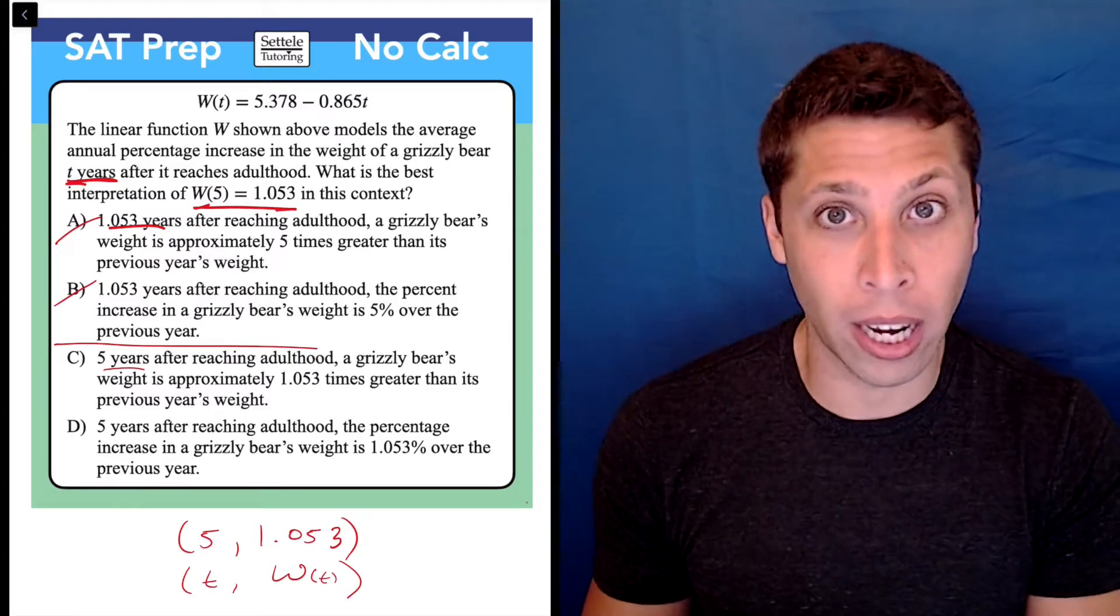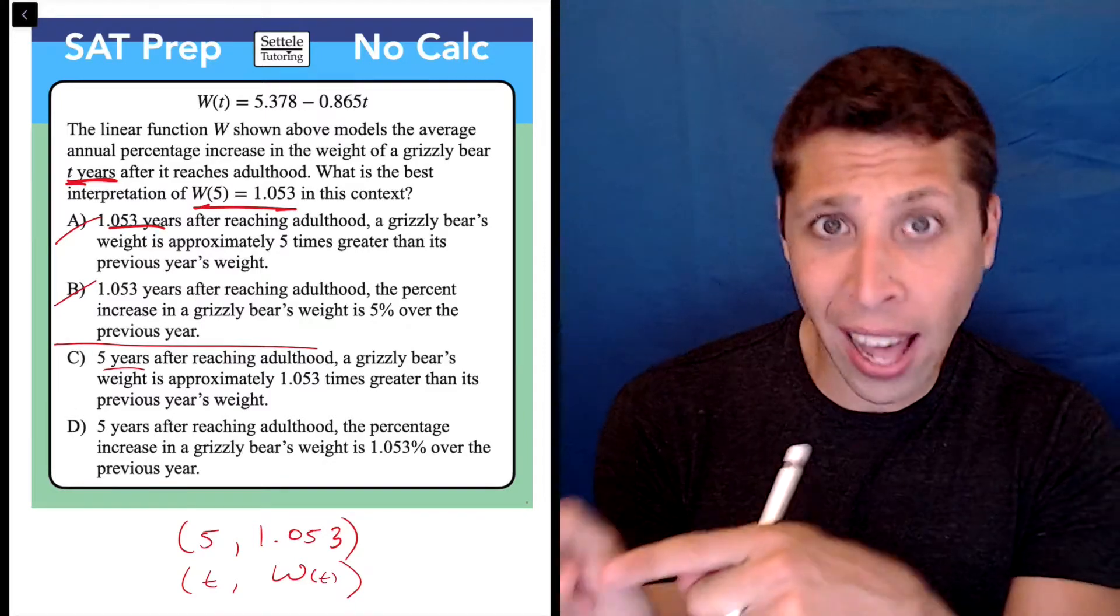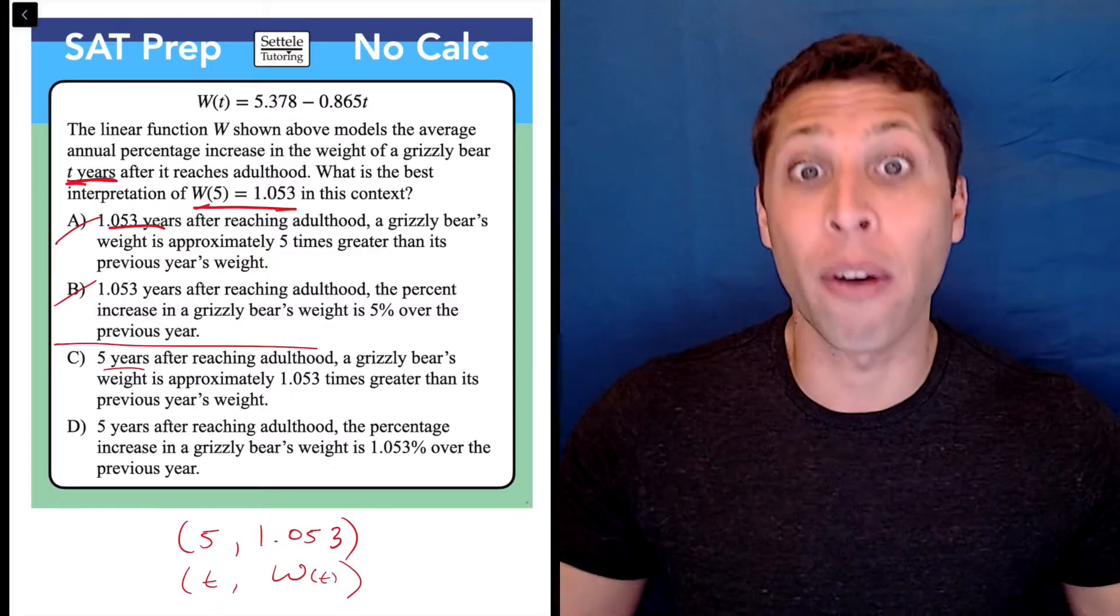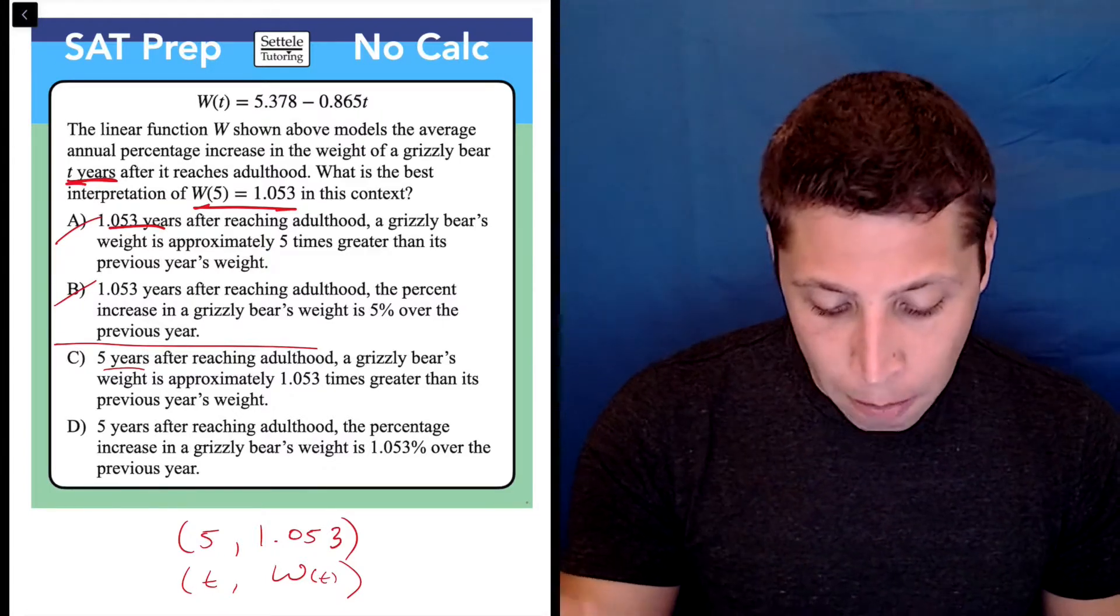So I barely understand this story, but I'm able to say, okay, that number is supposed to be the years, not the other one. And that gets me now a 50-50 shot of getting it right. Beyond that, we're really focused on whether it's 1.053 times greater or if 1.053 is a percentage.